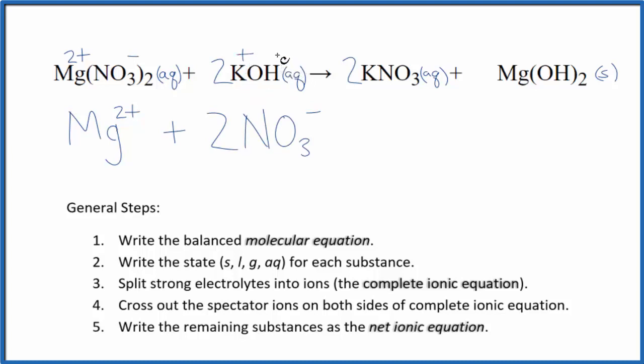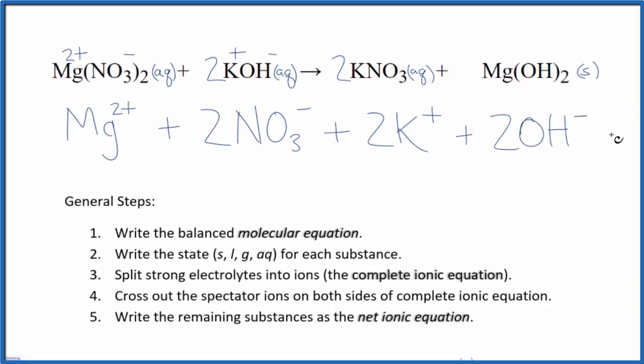The hydroxide has a negative charge, so I have two potassium ions and two hydroxide ions. Those are the reactants in our ionic equation.